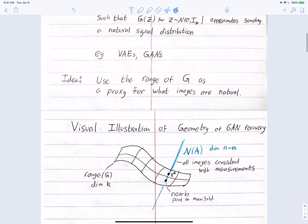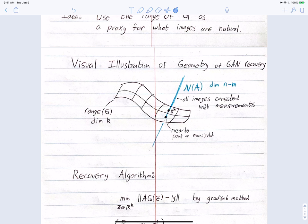From a visual perspective, think of ambient space as the set of all possible images. The range of g is a manifold — a subset of that space learned to represent the natural signal class. Natural images are all points on this manifold, which is k-dimensional because g maps from R^k into R^n, so its output has k degrees of freedom.